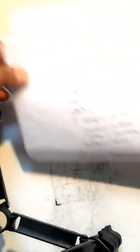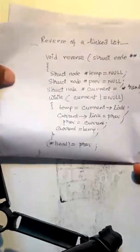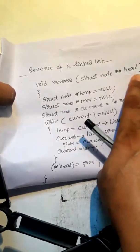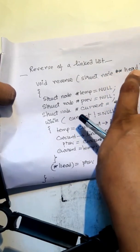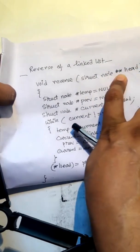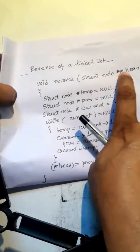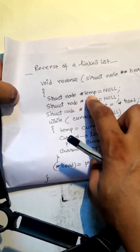Let us explain again. The function is void reverse. The void reverse function takes head pointer as a parameter — a node type head pointer, which is a pointer to pointer. Double star means pointer to pointer, single star means simple pointer.